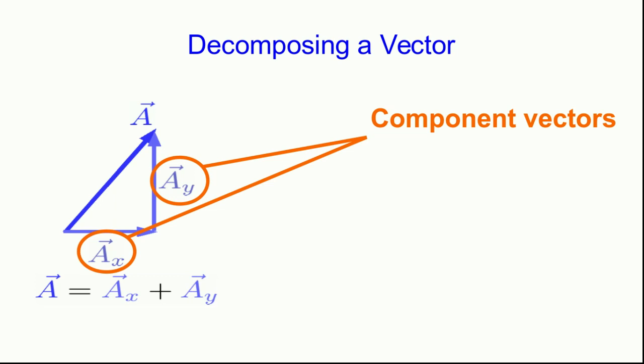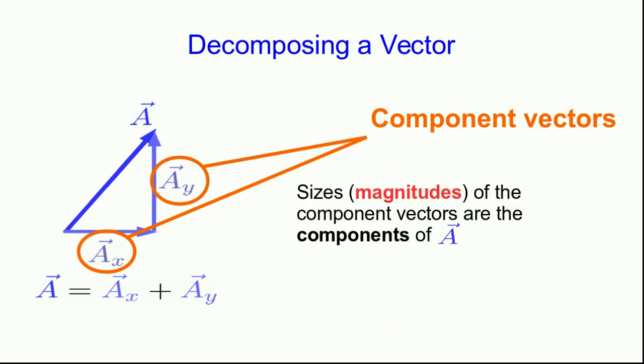Ax and ay are what we call the component vectors of a. They're two vectors that point parallel to our chosen axes which add up to give the vector. The sizes or magnitudes of the component vectors are what we call the components of a. So the notation is that ax vector and ay vector are the component vectors which add up to give a, and ax and ay which are scalars are the components.